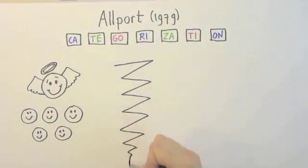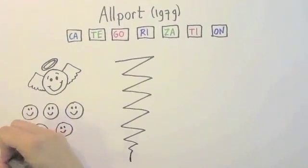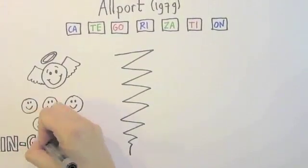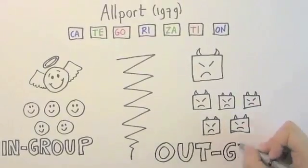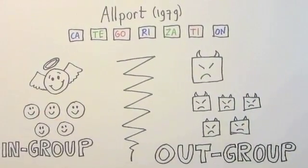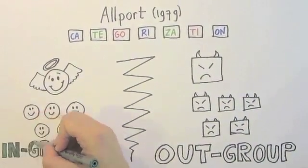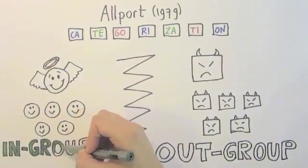In order to do so, we tend to maximize the difference between the group we belong to, or the so-called ingroup, and members that don't belong to our group, the so-called outgroup. Having a more positive image of the ingroup is often at the expense of the outgroup.